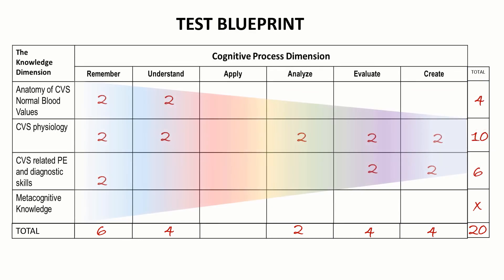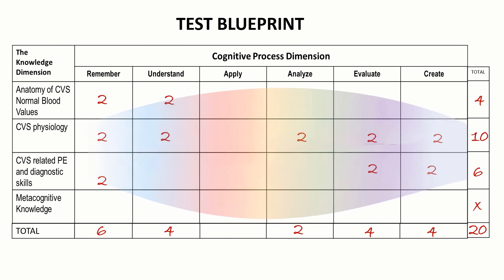In terms of where you focus your number of items relative to the cognitive process dimension, use the timing of the test as a major consideration. If the test is in the early stage of the program, focus item distribution on lower order thinking skills — Remember, Understand, Apply. As you move to the middle of the course, shift toward Application, Analysis, and some Create. At the end of the course, focus measurement on Higher Order Thinking Skills — Analyze, Evaluate, Create — with perhaps no Remember or Understand items at all.